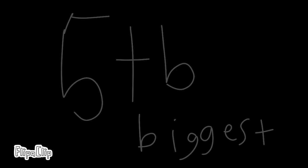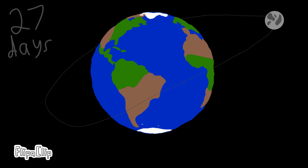The Earth's moon, also nicknamed as Luna, is the fifth biggest moon in the solar system. The moon takes about 27 days to orbit the Earth.